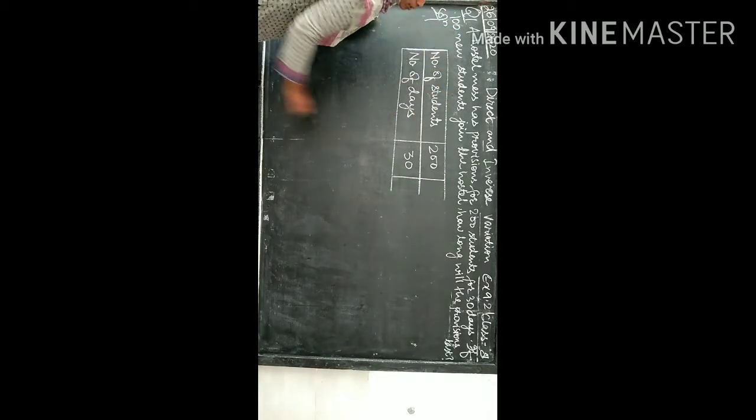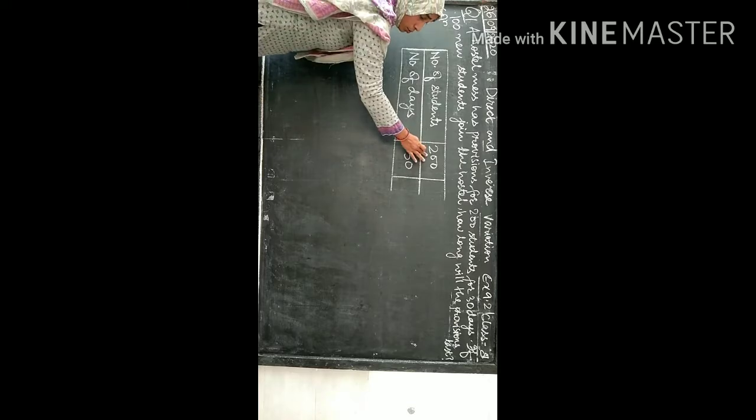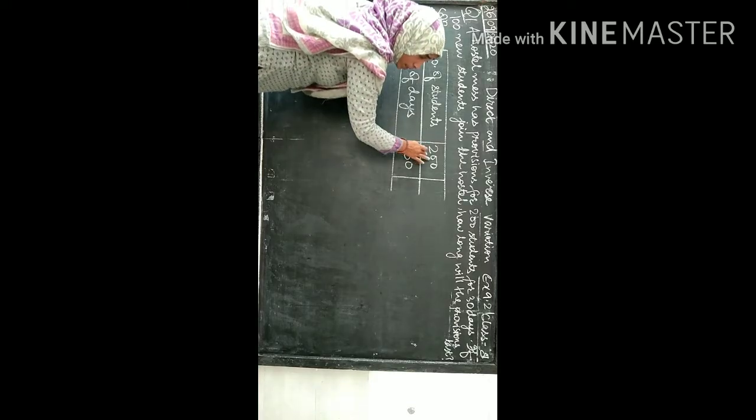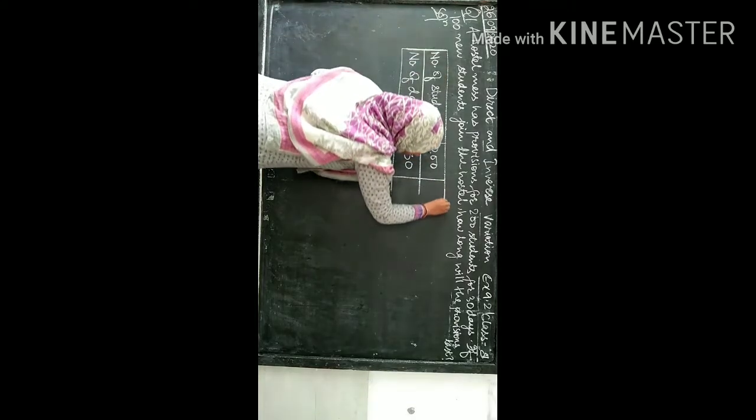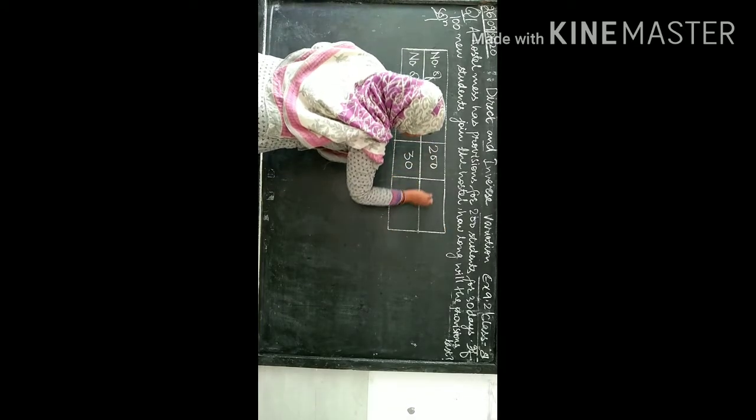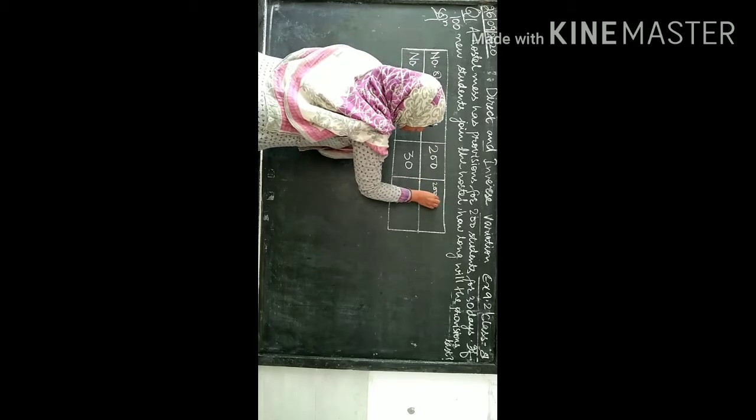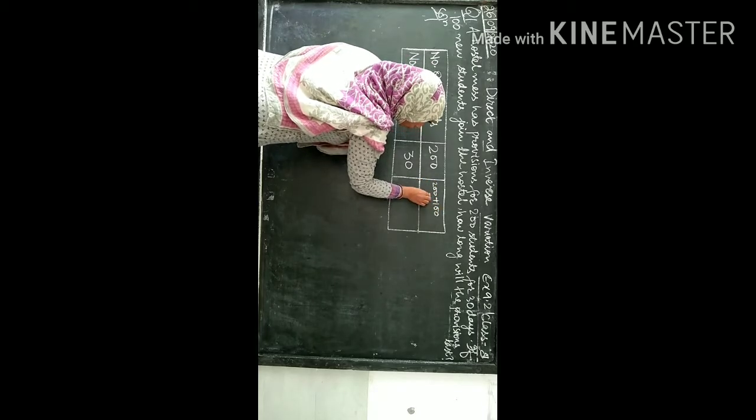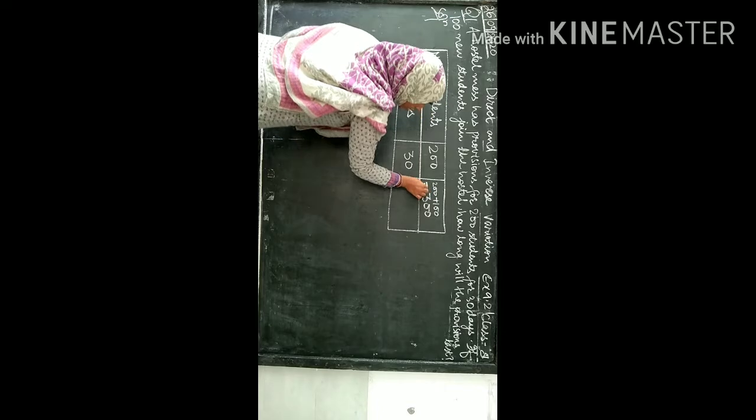If 100 new students join the hostel, 200 students already in the hostel. If 100 new students come to the hostel, total how many students? 300. Total students: 200 plus 100.